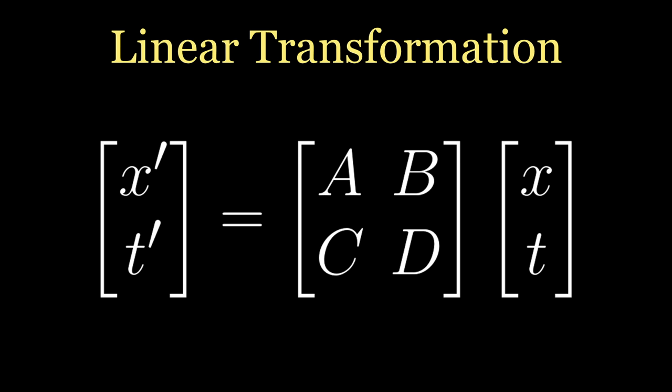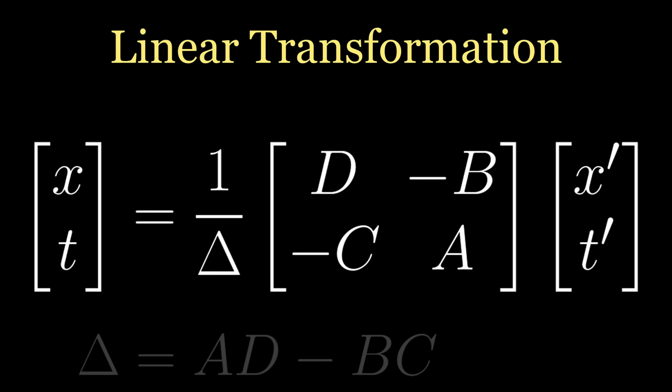One major advantage to this formulation is that it allows us to easily calculate the inverse transformation from Jim's frame of reference back into Annie's. This is accomplished by calculating the matrix inverse, which leads to the following expression. Note that the little delta here simply represents the determinant of the matrix, which is defined as AD minus BC for a 2x2 matrix.